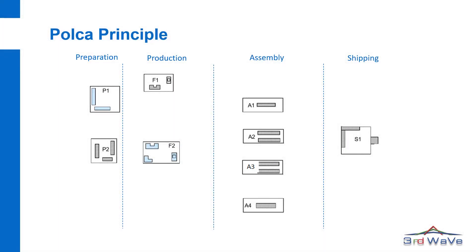This illustrates how Polka works. The shop floor example has been set up for four departments that each have one or multiple cells or work centers. The order flow for this example goes from P1 to F2 to A4 and finishes in S1.